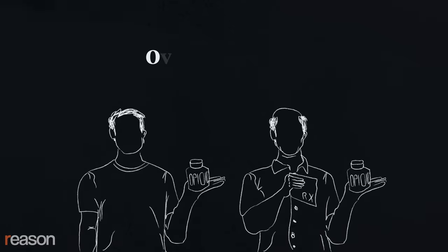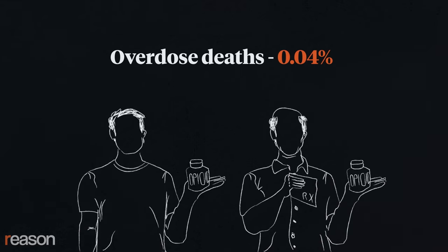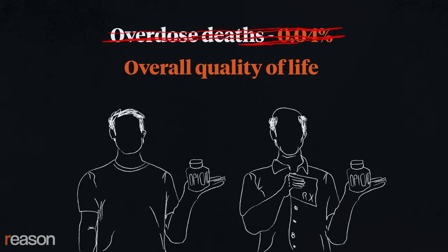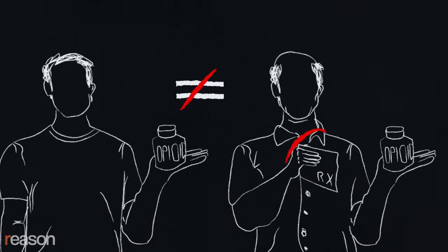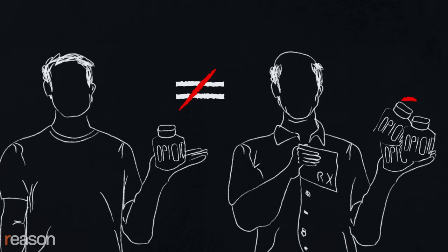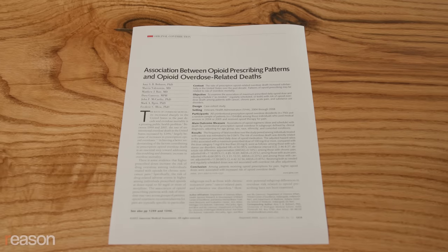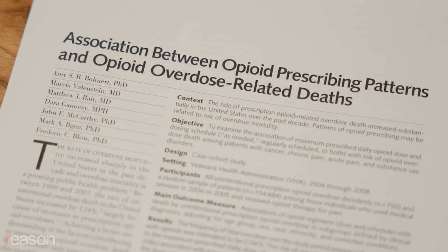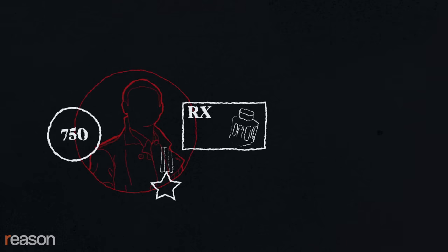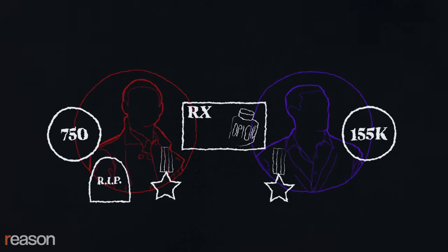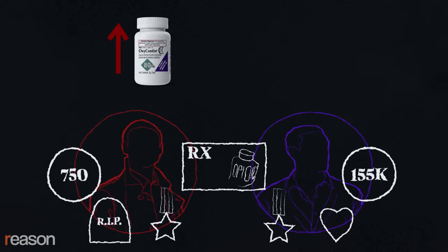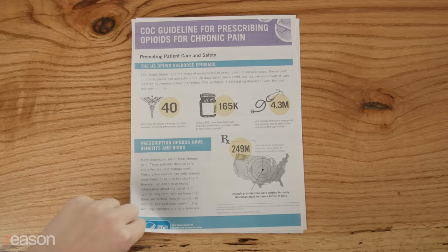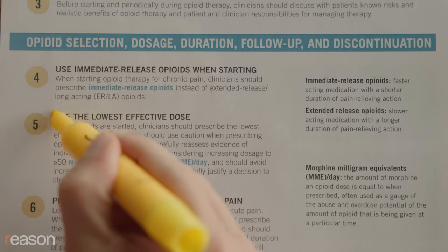Such matched pairs shouldn't just be checked for overdose deaths, which after all affect only 0.04% of patients, but for overall health and quality of life. Instead, researchers compared unmatched samples of patients, some of whom received higher doses of opioids than others. One influential and heavily cited study published in 2011 in the Journal of the American Medical Association began with a sample of 750 veterans health patients who received opioid prescriptions for pain and later died of opioid overdoses, compared to a random sample of 155,000 other veterans health patients who also received opioid prescriptions and didn't die of overdoses. It found that high-dose opioid prescriptions were more likely to lead to fatalities, a finding used to support CDC guidelines for strongly discouraging large doses.